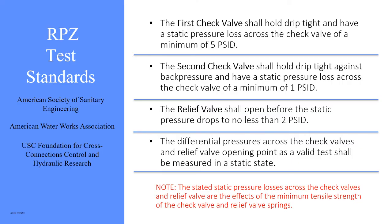RPZ test standards. The reduced pressure principal backflow prevention device assembly shall meet certain standards: the first check valve shall hold drip tight and have a static pressure loss across the check valve of a minimum of 5 PSID. The second check valve shall hold drip tight as well against back pressure and have a static pressure loss of a minimum of 1 PSID.